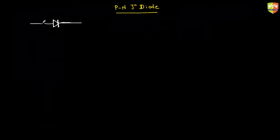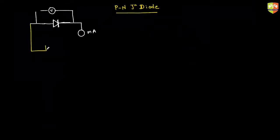To measure the potential difference across the PN junction, you connect a voltmeter across it, and to measure the current through the diode, you connect a milliammeter. The circuit is connected like this — tell me, is it forward bias or reverse bias? It is forward bias because the P side is connected to the positive terminal of the battery.